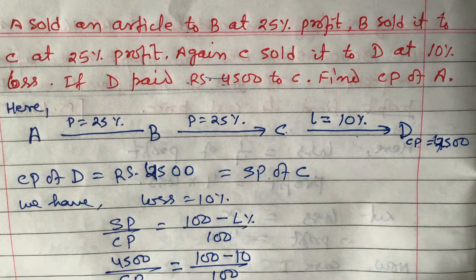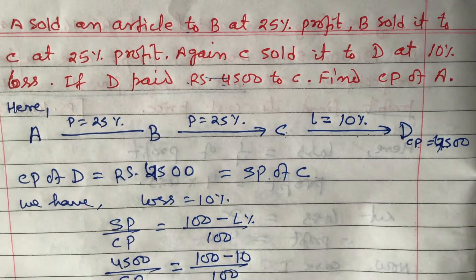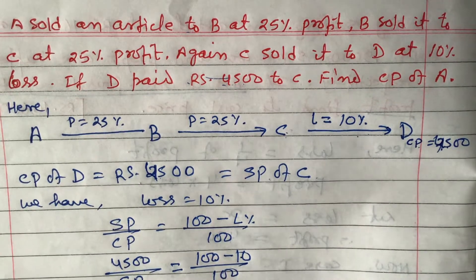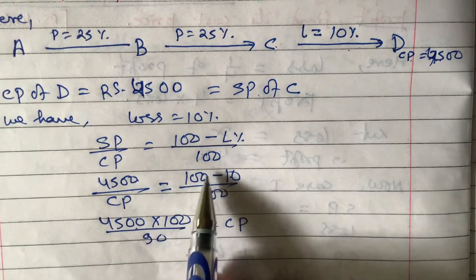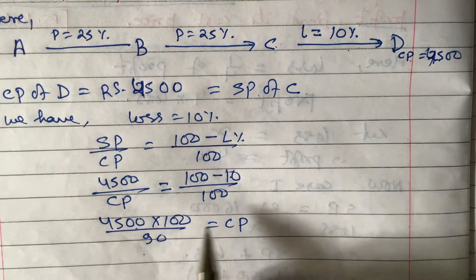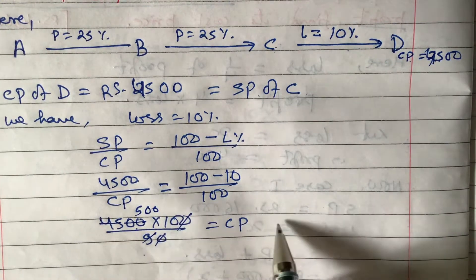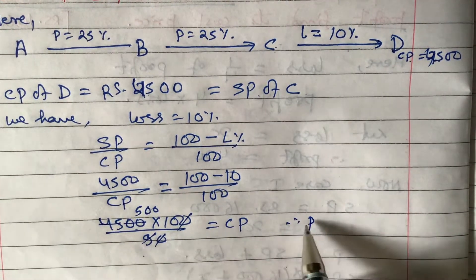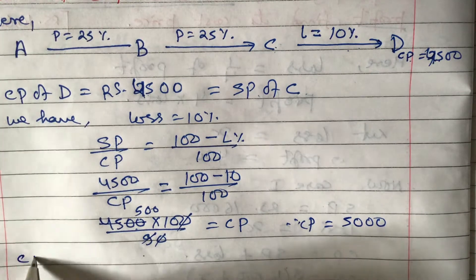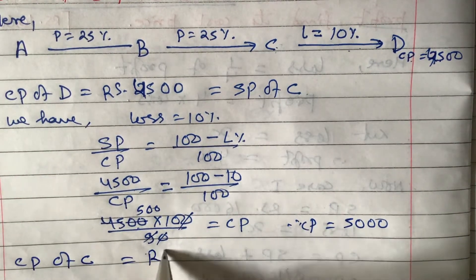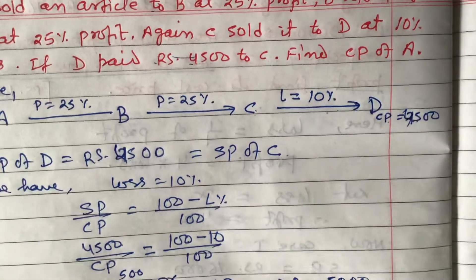Solving: 4500 × 100 / 90 — the zeros cancel, giving 500 × 10 = 5000. So CP of C = ₹5,000.